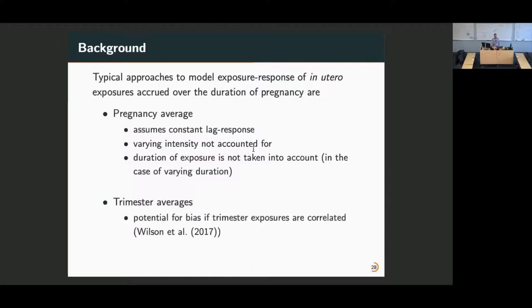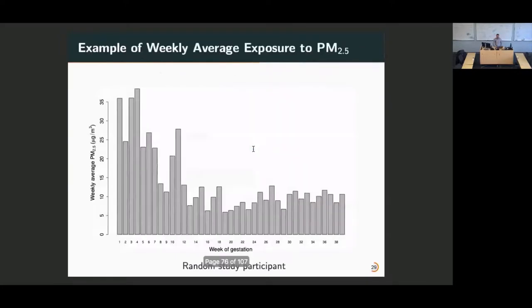If we're looking at typical outcomes at birth, the duration is fixed within two or three weeks. But because this example is preterm birth, the duration is not fixed. So that has also to be taken into account. Trimester averages are a little more flexible than pregnancy average. But they still, first of all, there is potential for biases if one specific trimester is truly the exposure that matters, but all three trimester exposures are correlated. For environmental exposures, they usually are. But also, we're still assuming this constant lag response within a trimester. So your exposure in week one is the same as week seven, eight, all the way to thirteen. And just to highlight what that varying intensity of exposure can mean, this is a random study participant. You see there's a lot of variation in exposure.